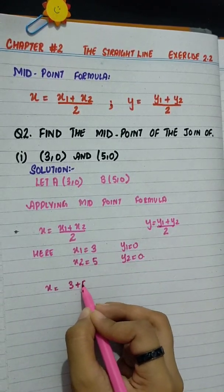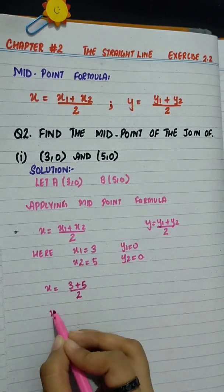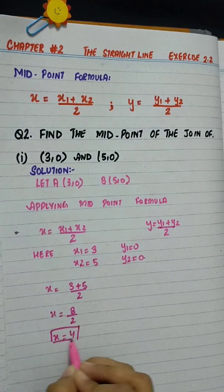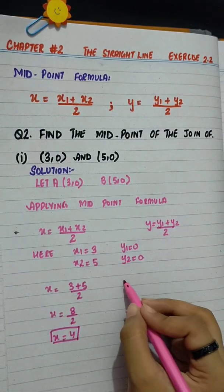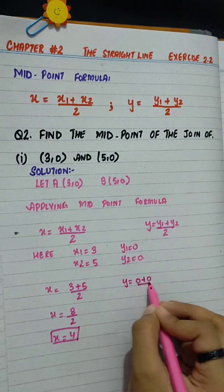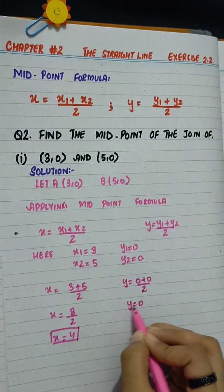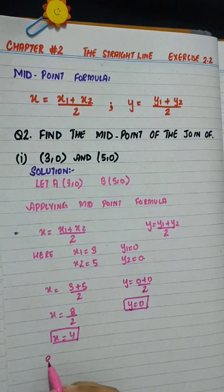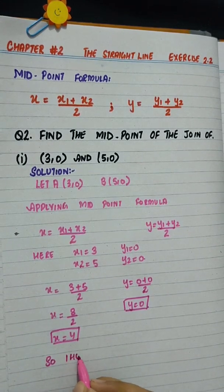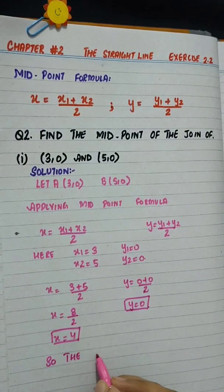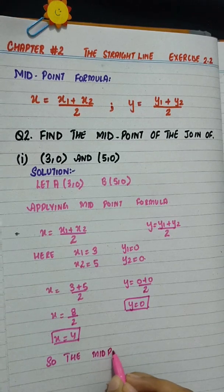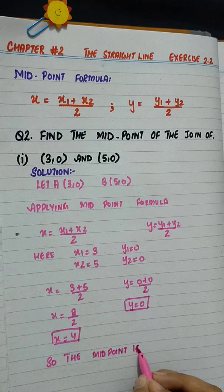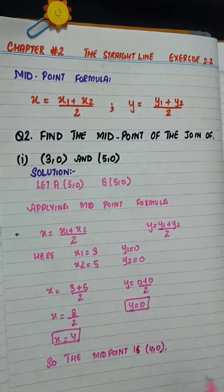x is equal to 3 plus 5 divided by 2 and x is equal to 8 divided by 2. x key value is 4. y is equal to 0 plus 0 divided by 2. So y equals to 0. So the midpoint is 4,0.